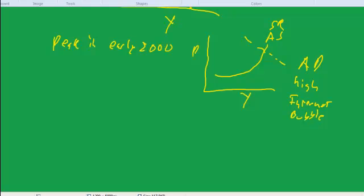But the internet bubble pops in 2000. And as a result, aggregate demand shifts down. So this is when the bubble pops.